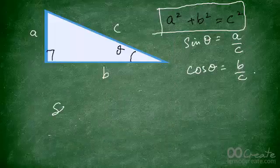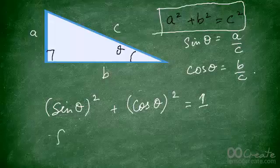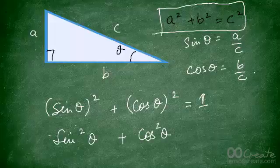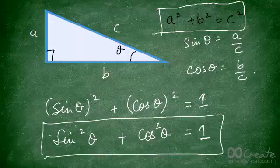Therefore, sin squared of theta plus cos squared of theta is equal to 1. This is also written as sin²θ + cos²θ = 1. This is a very important and useful trigonometric identity, so please make sure you learn this.